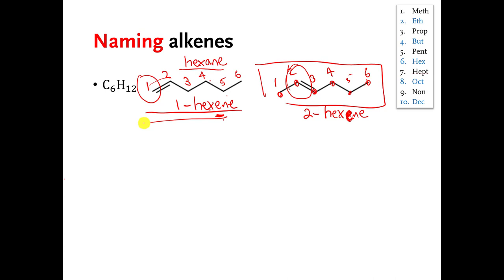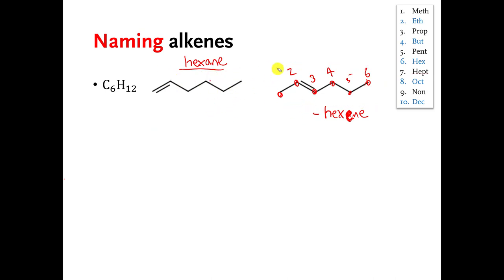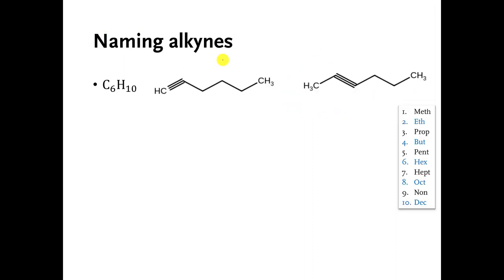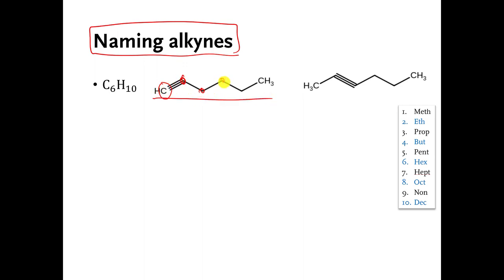The same general rules apply if you have a carbon-carbon triple bond. Here's a molecule with a carbon-carbon triple bond — one, two, three, four, five, six carbons. So it's like hexane because it has six carbons, but it has an alkyne functional group, so we're going to call it hexyne.